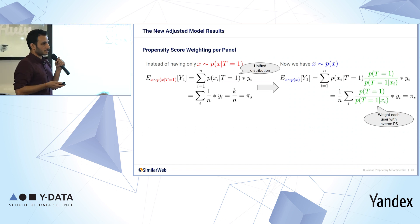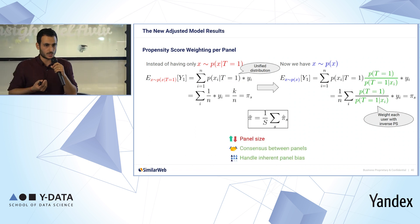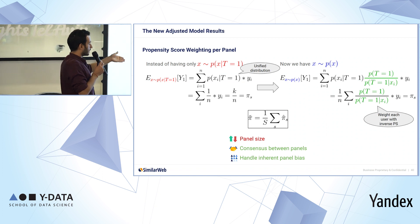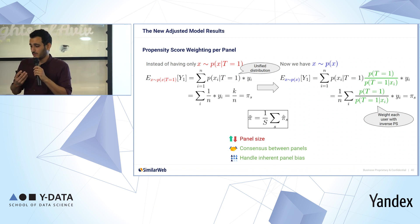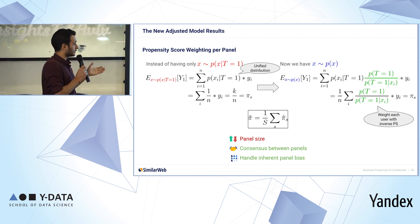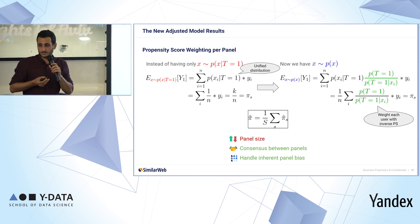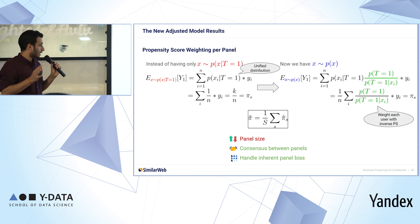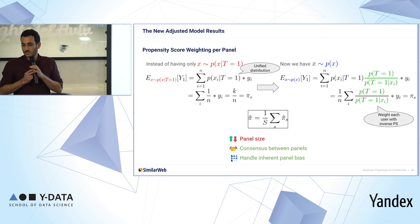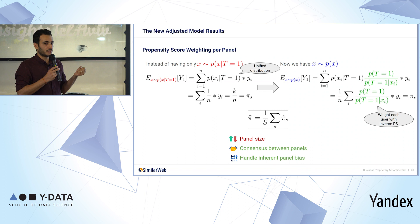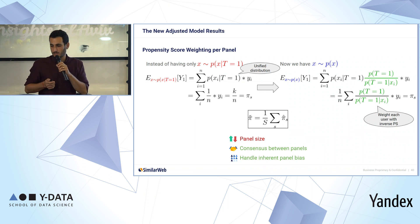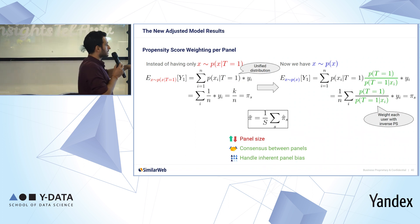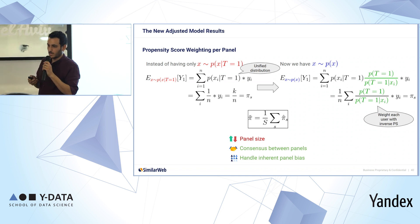So instead of having only X seen in the panels — where each panel is T=1 — we want X to come from P(X), the general population of users. We multiply each user by the green term (the inverse propensity weight) to re-weight them to the general population, approximated by Chrome users. After doing this for each panel, we average to get pi tilde. Regarding our evaluation criteria: panel size is not directly accounted for in this method, but consensus and handling inherent panel bias are both addressed — the propensity score handles bias, and averaging over all smoothed pi values captures consensus.